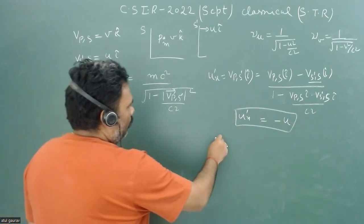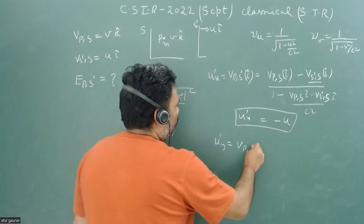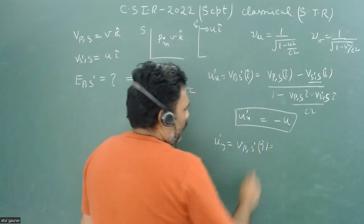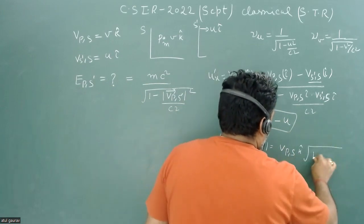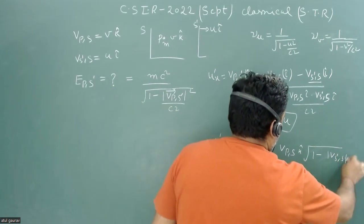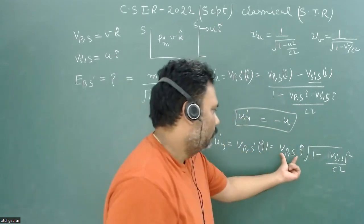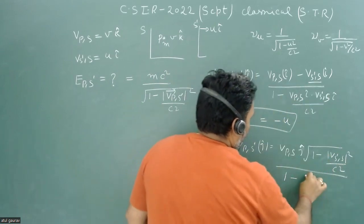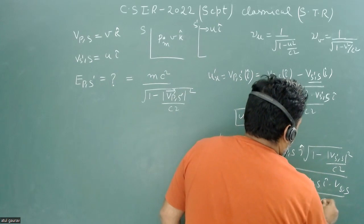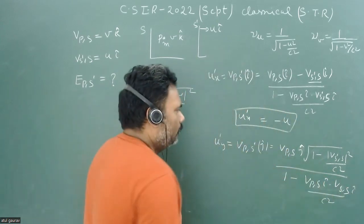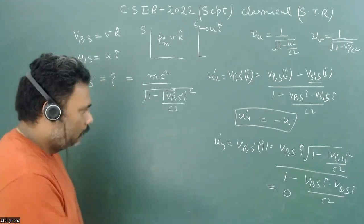Similarly, we calculate the velocity of the particle with respect to S-dash in the j-cap direction using the transverse velocity transformation formula: (uy × √(1 − u²/c²)) / (1 − ux·u/c²). Since the particle has no velocity in the j-cap direction, uy-dash = 0.